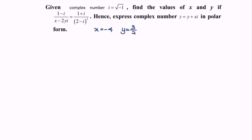Kindly substitute into the expression where we have z is equals to 3 over 2 minus 4i. The question asks us to express this complex number z in polar form.